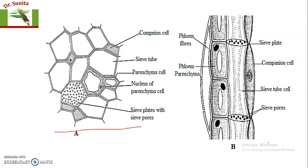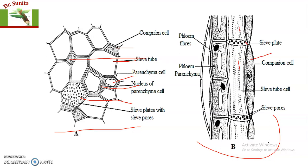This is the transverse structure of the phloem elements and this is the longitudinal structure. The sieve tube is associated with companion cells. These are the parenchyma cells, which are living cells having the nucleus. These companion cells also possess a nucleus and dense cytoplasm. These are the sieve plates with sieve pores. Here it is showing the companion cell along with the sieve tube cells, with sieve tubes connected to each other via pores in the sieve plates. These are the parenchyma cells with dense cytoplasm and nucleus, and these are the phloem fibers.